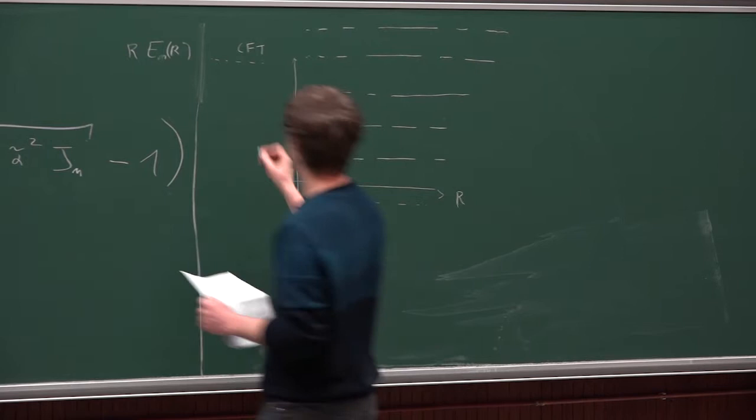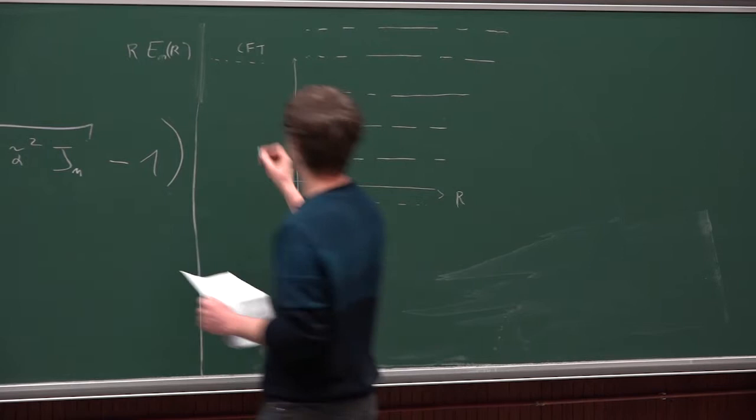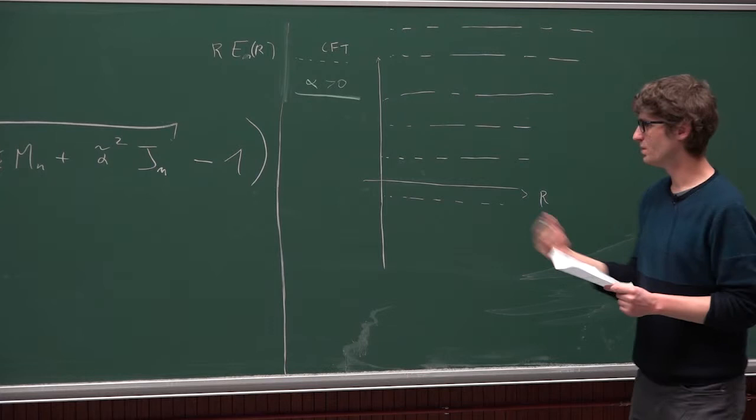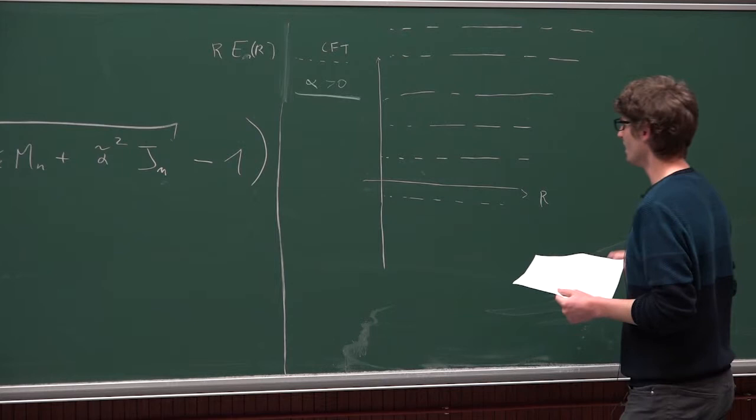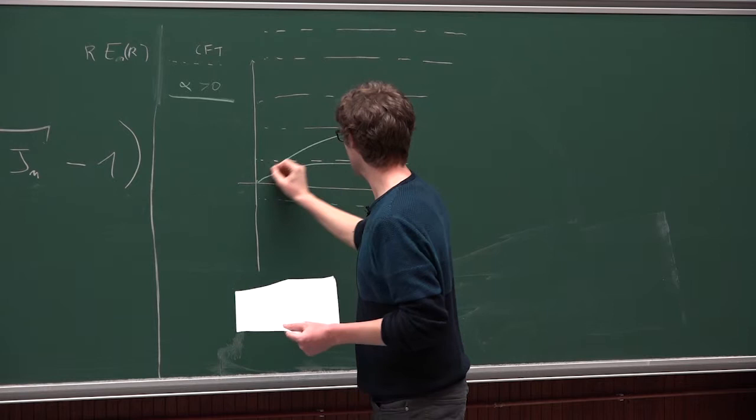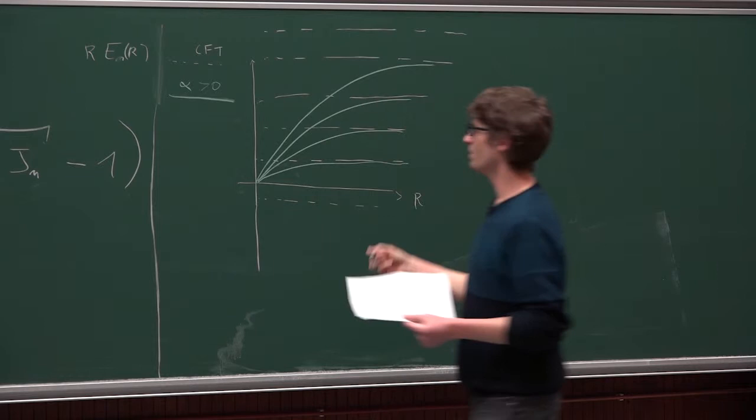Okay, so, and now, well, if you plot this function, so here I'm considering J would be zero, but, so you will find that, so for large R they behave like the levels in the CFT, and then they bend like this. So they never cross. And notice, so I'm assuming that essentially all the degeneracies are maintained.